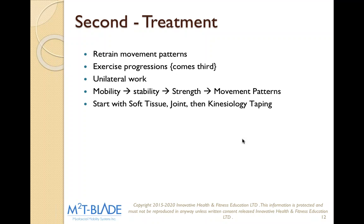From there we go into our treatment. Our goal is to retrain movement patterns, starting with unilateral work. We always want to start with mobility, then go to stability. Find out what's not moving and make it move better. If we look at the knee — if we have knee pain, we look at the hip and the ankle. If those are immobile, another joint has to compensate, which is the knee. We create mobility at the hip and ankle using our instrument, then create stability through the knee, and then move to strength and movement patterns.